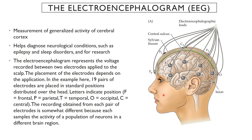Leads are placed across the scalp on very specific positions. The different letters refer to the position of particular cortical areas: F is frontal, P is parietal, T is temporal, and O is occipital. The recording from each pair of electrodes is somewhat different because it samples activity of a population of neurons in a different brain region. You're not going to see exactly the same kind of activity in, say, the orbital cortex as you will in the frontal cortex, particularly with visual stimulation or when looking at faces. The activity is correlated with whatever the patient or research subject is doing. You will also see these overall rhythms, which is a very important feature of the brain.